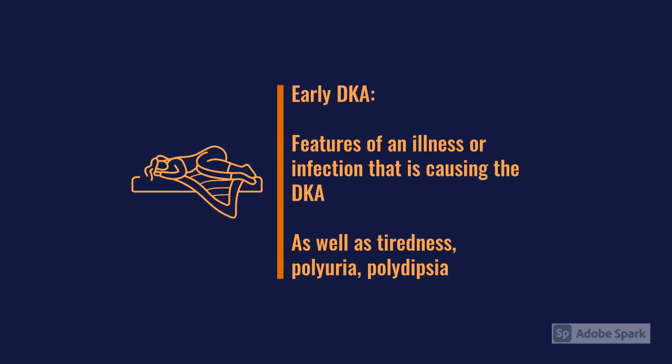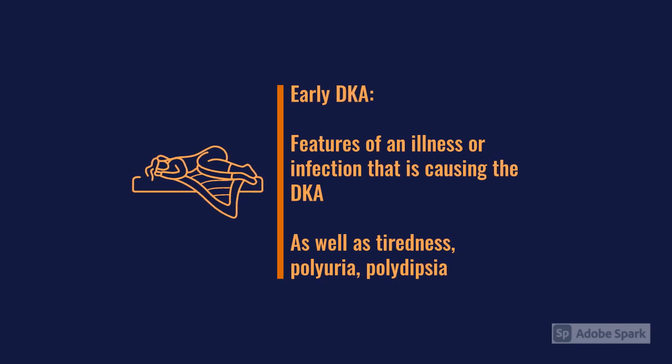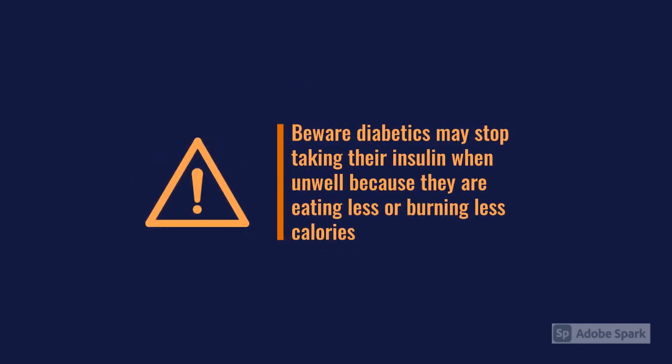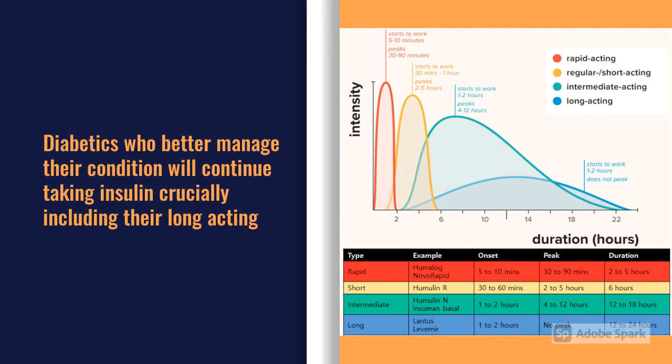Early on, patients might just have a mild illness. There's often a precipitating cause — something that has destabilised them, and more often than not it is an infection somewhere. A lot of the time, known diabetic patients with an infection will stop taking their insulin because they feel unwell and think they need less. Actually, that's the worst thing they can do. More experienced diabetics will still take their long-acting insulin to prevent going into DKA, whereas inexperienced patients may stop altogether, causing more harm than good.